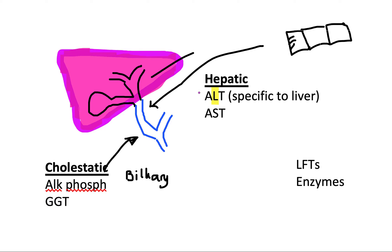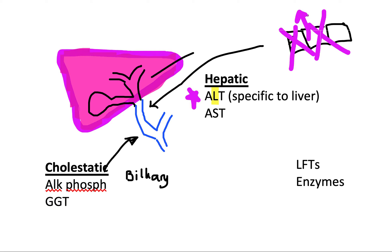ALT is specific for the liver — remember that because it has an 'L' in it. AST is non-specific. When you have damage to the hepatocytes, you naturally get leakage of these enzymes, and when they leak out, that tells us what disease the patient is going through — the underlying pathophysiology in that particular patient.